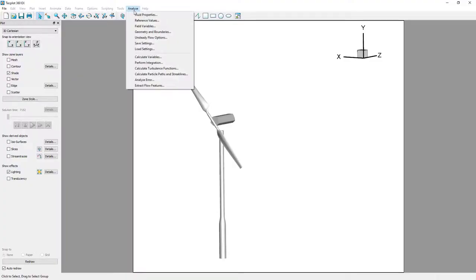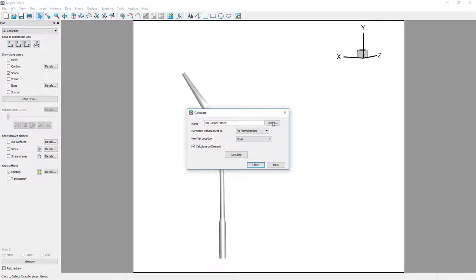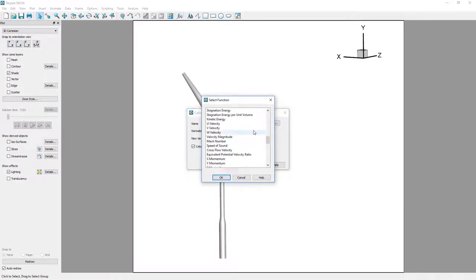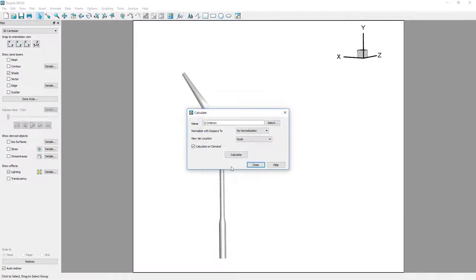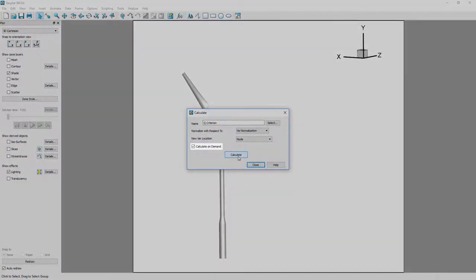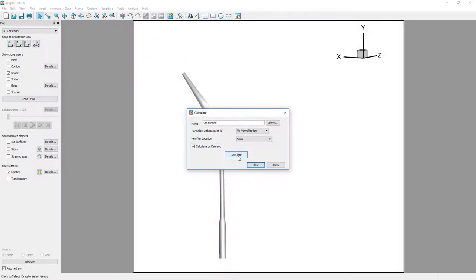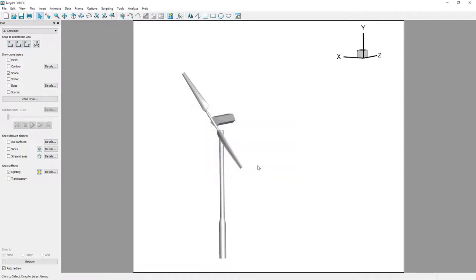To calculate Q-criterion, go to Analyze Calculate Variables and select Q-criterion from the list. The Calculate Variables dialog has a unique feature called Calculate on Demand. If you check this toggle, the formula will simply be registered and the calculation will not occur until it is required. This can save a significant amount of time, particularly for a dataset such as this which has many zones, because the calculation will only be performed on the zones required for the desired plot.